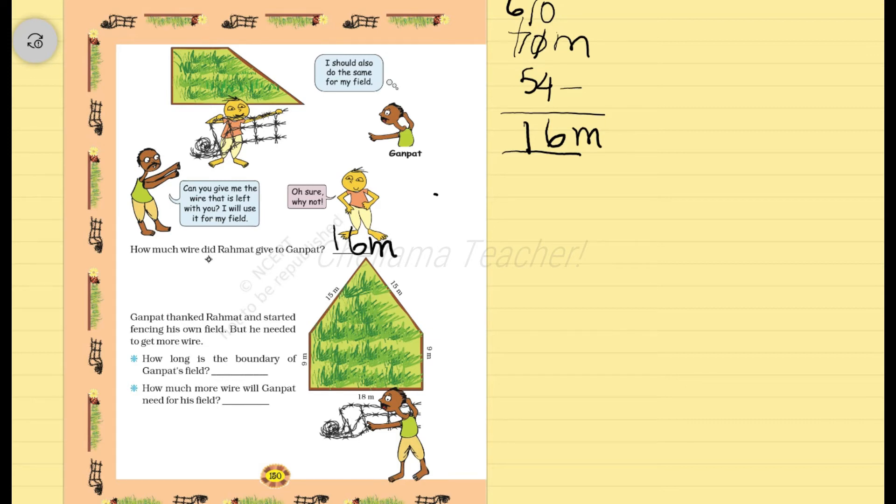We have to count the sides first. Side 1. Side 2. This is side 3. This is side 4. This is side 5. So totally 5 sides are there.